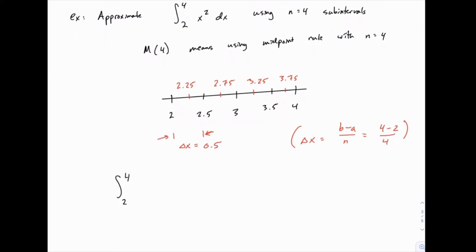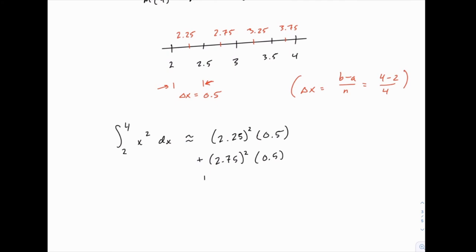So the integral from 2 to 4 of x squared is approximately equal to 2.25 squared times 0.5, plus 2.75 squared times 0.5, and so on. And this can get tedious after a little while, which is why we'll stick to generally relatively short examples with only a few subintervals. If we want to do more, we would use a computer to do it for us, so that we can avoid the tedious repetitive calculations.